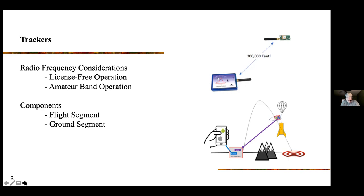There are always two segments to think about when talking about trackers: the flight segment, which is the component that goes in the rocket, and the ground segment, which receives signals from that rocket. It provides GPS location and usually the altitude of the rocket. The data received from the rocket by the ground station can be displayed in a plethora of ways — you can use your cell phone, as shown in the featherweight tracker scenario.